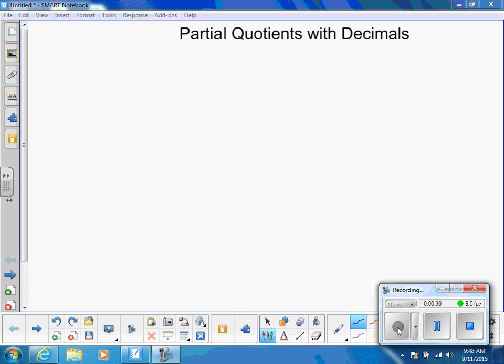Our problem is 29 and 6 tenths as our dividend. We're going to divide that by the divisor 8 tenths.